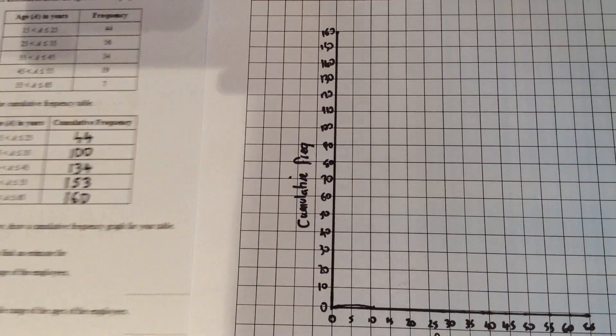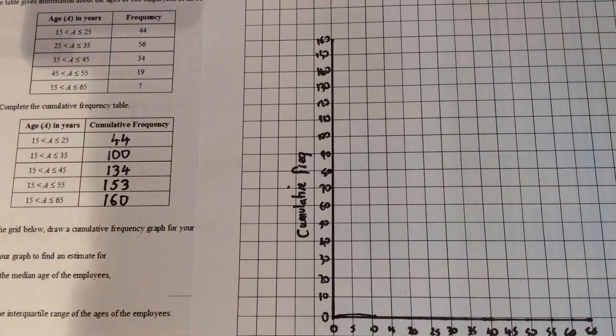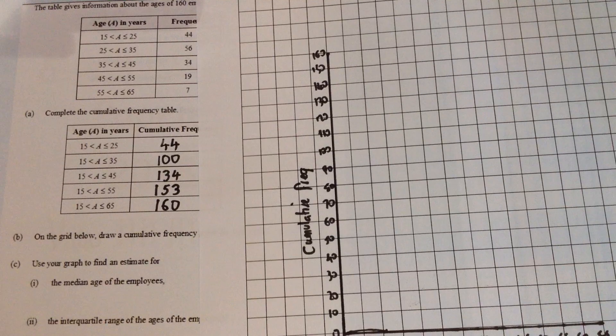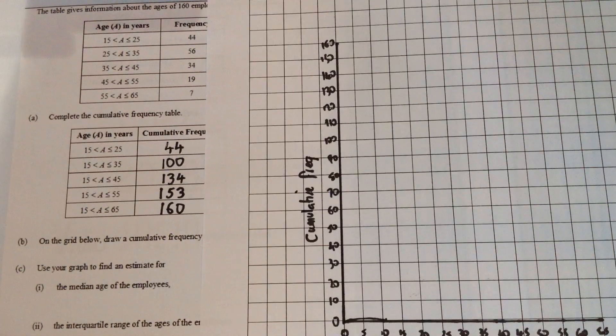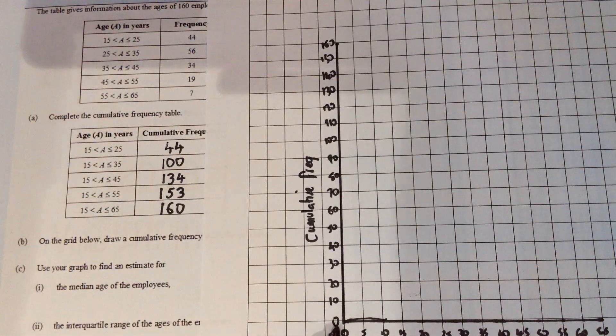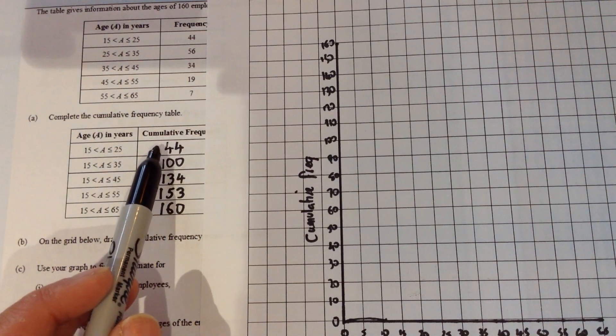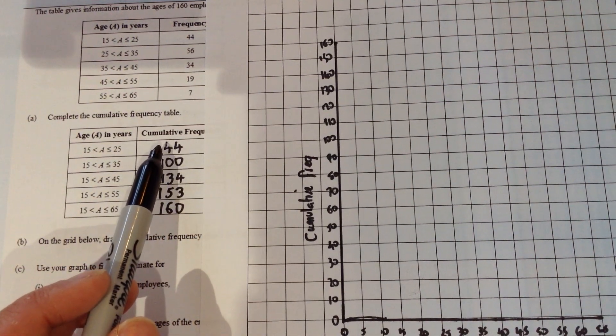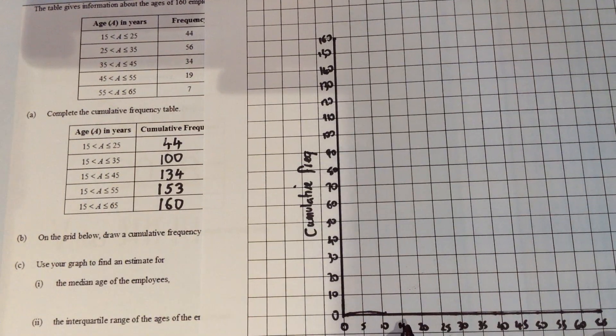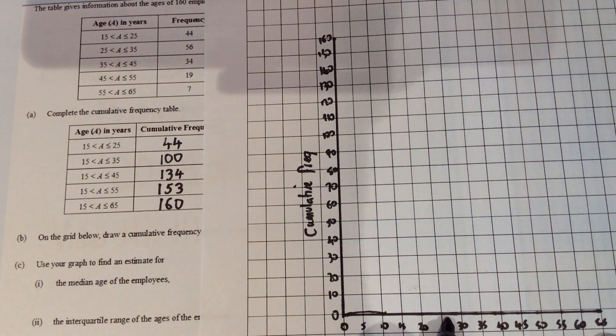If we just bring that table back in, at least enough so we can see the numbers, for the 15 to 25 group with a cumulative frequency of 44, we go to the end of the groups, we go along to 25 for the first one and then up to 44.